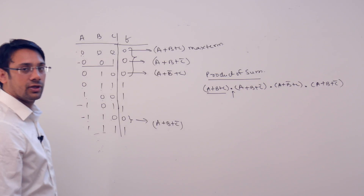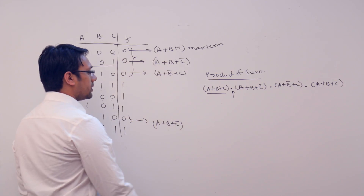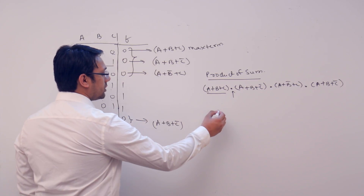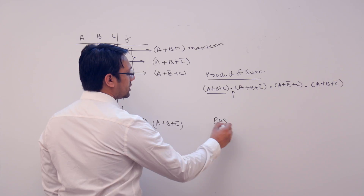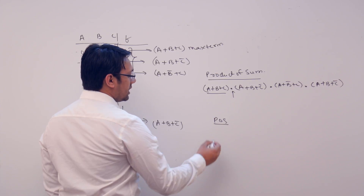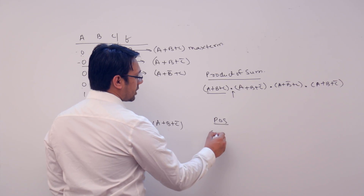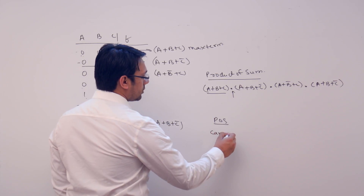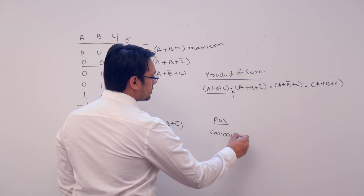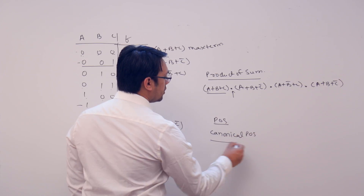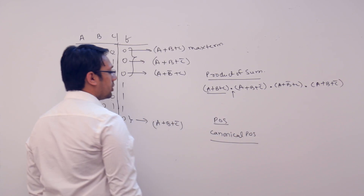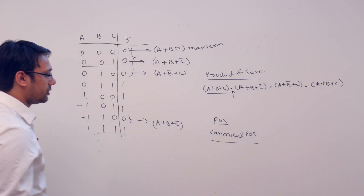We have two types of product of sum. Number one is a simple product of sum, that is POS. Second one is a canonical product of sum forms, or you can say canonical product of sum forms.